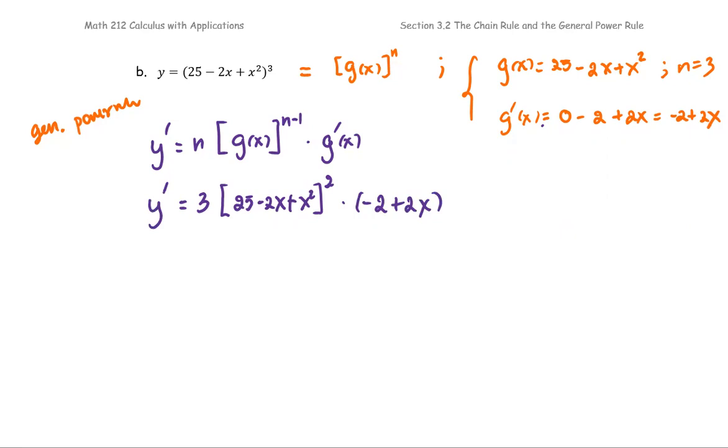If you want to simplify more, you can do so by factoring the 2 out. I can see this as negative 1 times 2 and this is 2 times x, so I factor the 2 out. It becomes 2 multiplied by negative 1 plus x. Then my other form of the derivative is going to be 3 times 2, which is 6, multiplied by the quantity 25 minus 2x plus x squared raised to the power 2 and multiplied by negative 1 plus x. You can answer either this form or this form; I'm okay with either one.